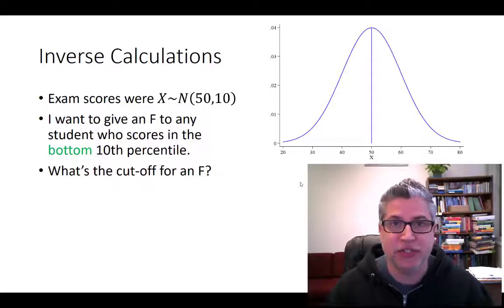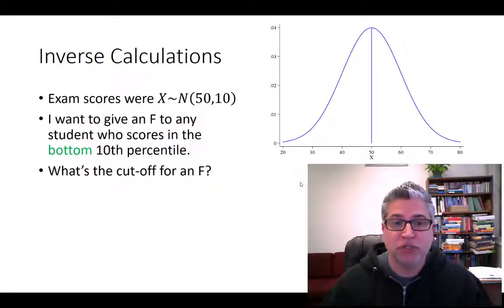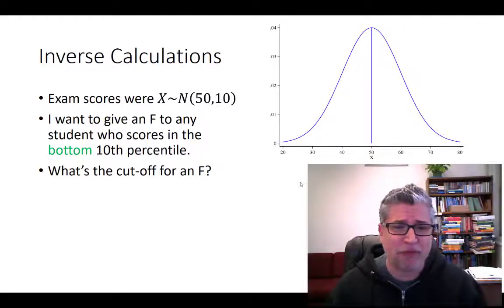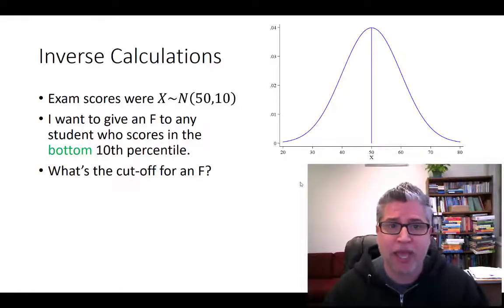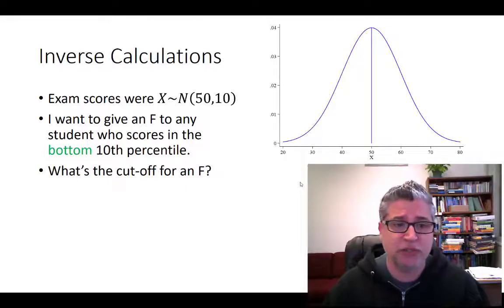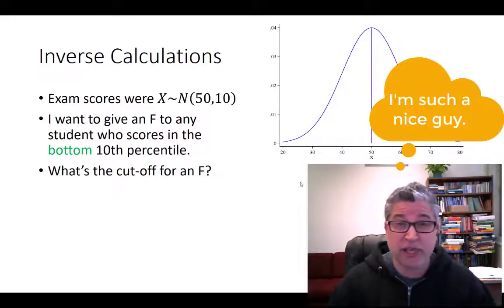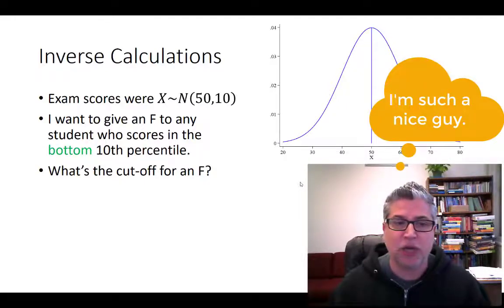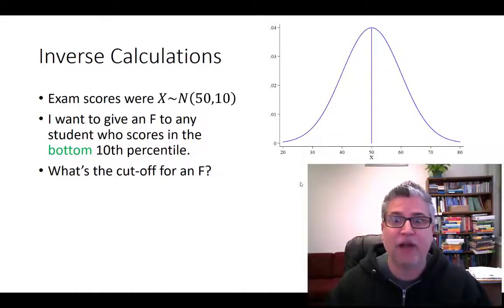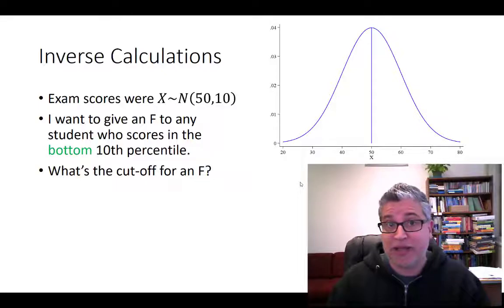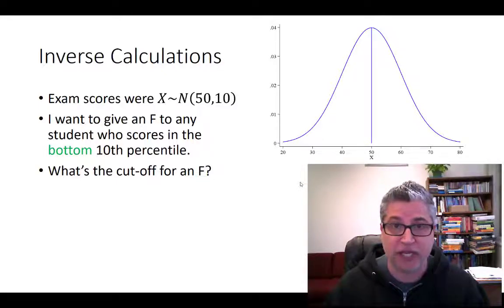It's just as easy to do this with non-standard normals. So here's a little made up example. Let's say I gave an exam and the class did horribly. The average was at 50%, so the class average failed, and the standard deviation happened to be 10. Now I don't want to fail almost all of my students. I only want to fail the ones that did really poorly compared to everyone else. So I decide that I'm going to give an F only to those students that scored in the bottom tenth percentile. And I need to figure out what value of x of my test scores would put students in the tenth percentile.